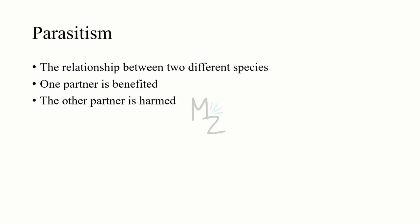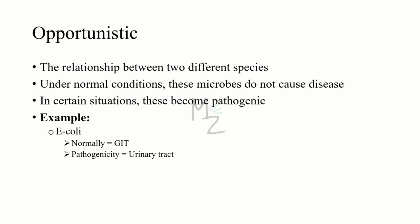Parasitism is a type of relationship between two species in which one partner gets benefit while the other is harmed. The opportunistic relationship is similar to parasitism but different. Under normal conditions, these microbes do not cause disease. For example, E. coli is present normally in our gastrointestinal tract and does not cause disease there — in fact, it helps us by producing vitamin K and vitamin B. But in certain situations, these microorganisms become pathogenic. If E. coli gets the opportunity to get into the urinary tract, it will lead to a UTI.